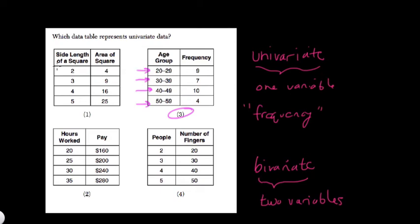All the other ones, like this first choice, side length of a square and area of the square. Well, the side length of the square, if it's two on each side, the area would be four. If it's three on each side, the area would be nine. In other words, these two variables affect each other. It's bivariate data.